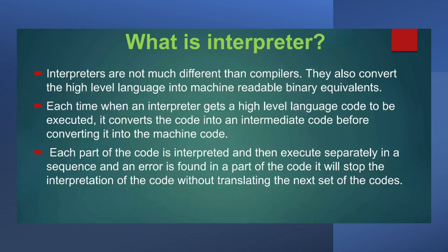An interpreter is that language processor that converts high level language programs into machine language by converting and executing it line by line. Each time the interpreter gets a high level language to execute, it converts the code into an intermediate code before converting into actual machine code. Each part of the code is interpreted and then executed separately in sequence. If any error is found, it will stop the interpretation without translating the next set of codes — reporting the error at that line as soon as you press enter, and execution cannot resume until the error is rectified.